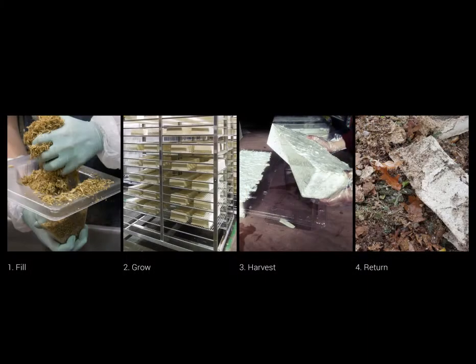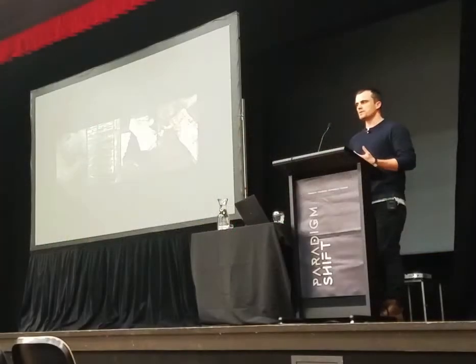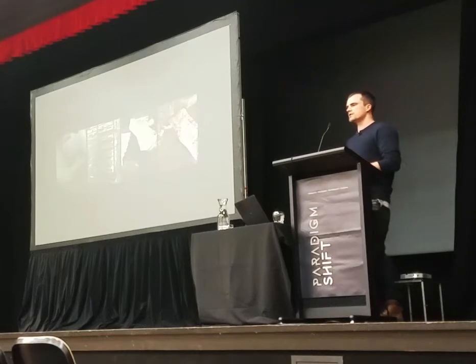To do this, we developed a new kind of building material made up of two components: agricultural waste — in this case corn stalks from farms in upstate New York, which is the waste left over once the kernels are harvested — and mycelium, the root structure of mushrooms. We take that corn stalk, chop it up, and mix it with mycelium, then put it into a form.